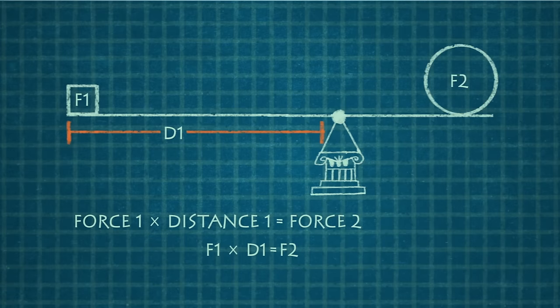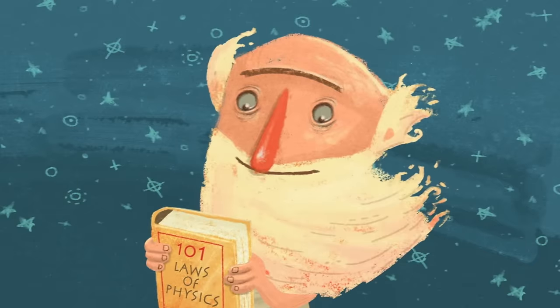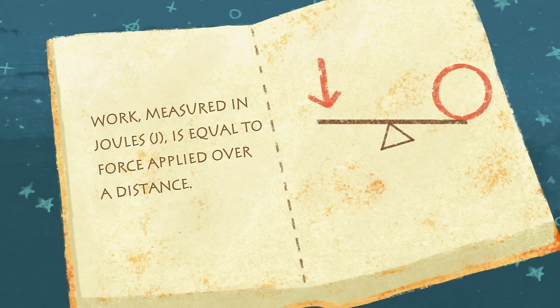The lever is balanced when the product of the effort force and the length of the effort arm equals the product of the resistance force and the length of the resistance arm. This relies on one of the basic laws of physics, which states that work measured in joules is equal to force applied over a distance.